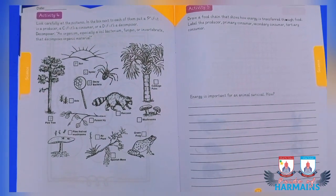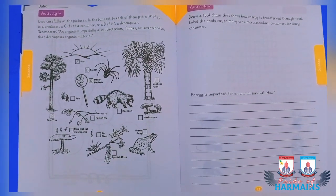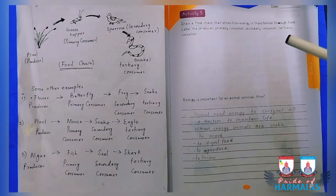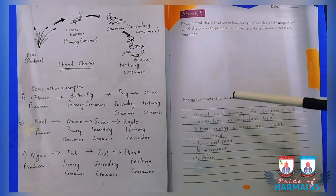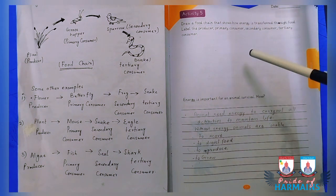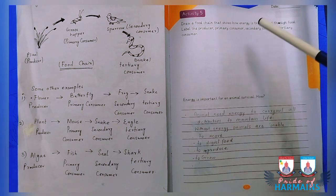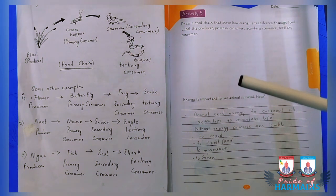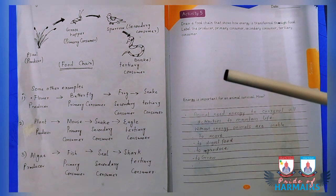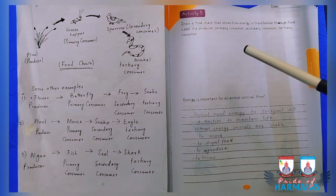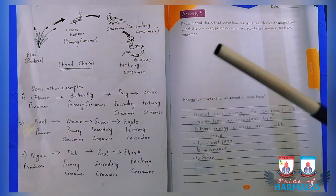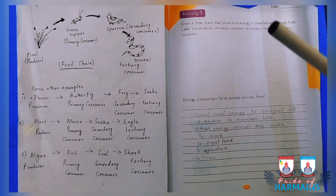From Class 4 Science, here you have to draw a food chain and show how energy is transferred among producers, primary consumers, secondary consumers, and tertiary consumers. I am going to give you an introduction to this and then give you an example of a simple food chain.